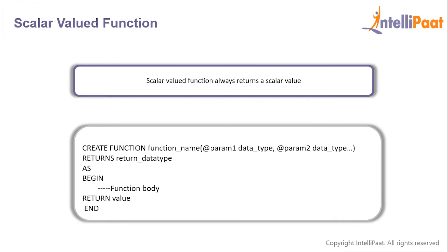A scalar valued function always returns a scalar value. A scalar value could be int, varchar, date, and so on. This is the syntax for a scalar valued function: we type CREATE FUNCTION, then give the function name, and inside the parentheses specify the parameter names and their data types. Since the function returns a value, we type the RETURNS keyword and specify the return type. After that we type AS BEGIN, give the function body, then RETURN the final scalar value, and use the END keyword to close the function.